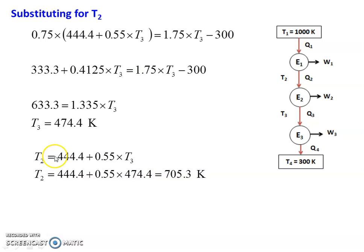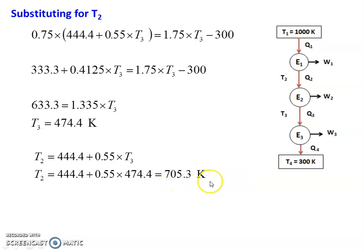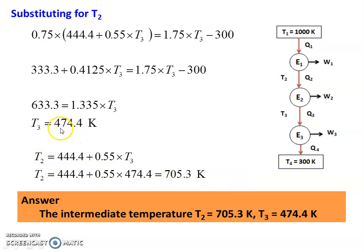Now substituting T3 equal to 474.4 back into T2 equal to 444.4 plus 0.55 into 474.4: T2 equal to 444.4 plus 260.9 equal to 705.3 Kelvin. So the answers are: T1 equal to 1000 Kelvin, T2 equal to 705.3 Kelvin, T3 equal to 474.4 Kelvin, and T4 equal to 300 Kelvin. This is the answer to the problem.